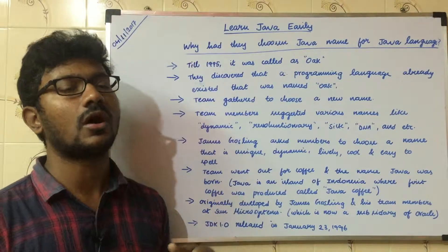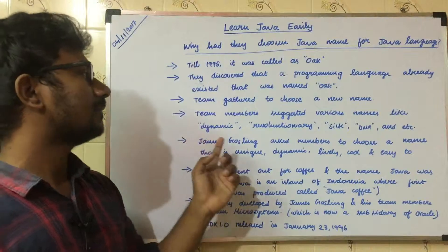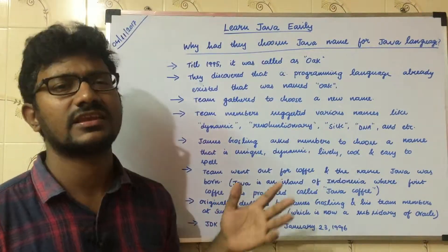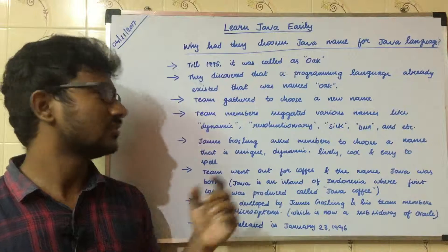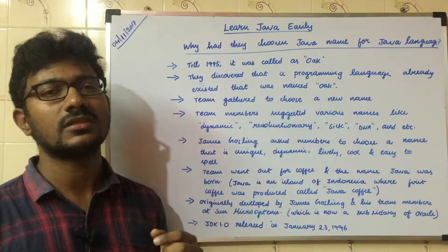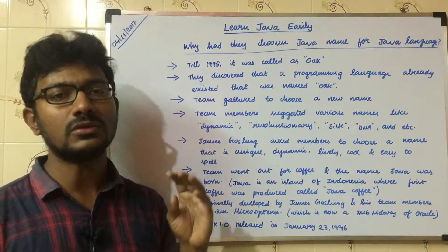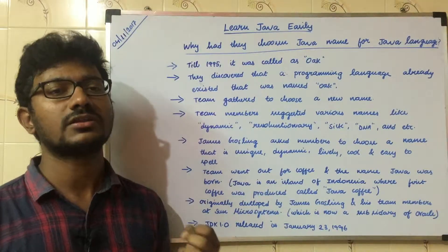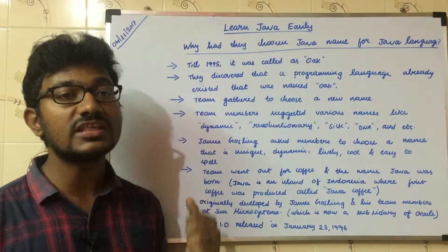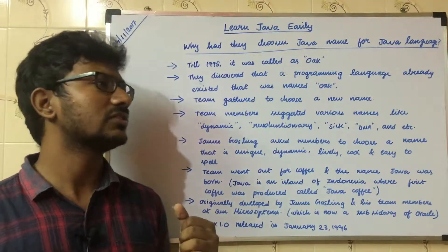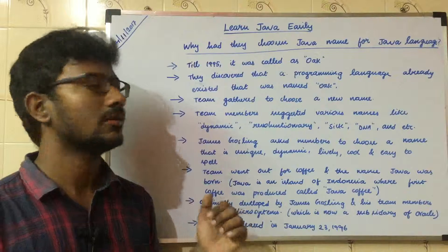The team members were stuck, so they thought of various names like dynamic, revolutionary, silk, DNA, etc. But James Gosling didn't show interest in those names. He had an idea that the name should be unique, dynamic, easily spelled by people, and should easily reach people. They thought of various names but none of them clicked.